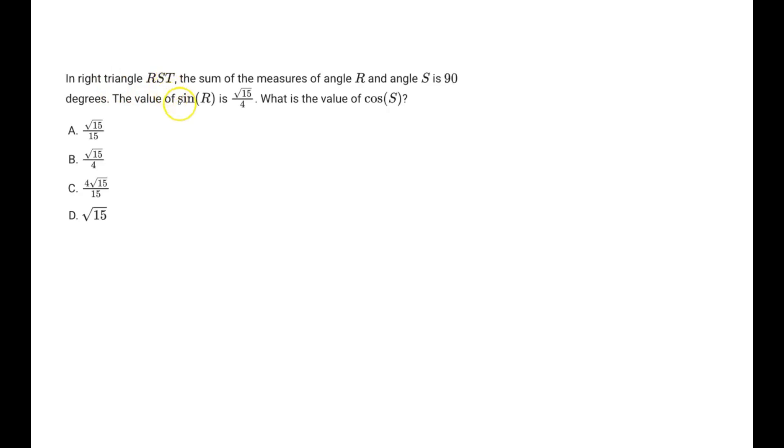In right triangle RST, the sum of the measures of angle R and angle S is 90 degrees. So angle T is the 90 degree angle. The value of sine R is square root 15 over 4. What is the value of cosine S?